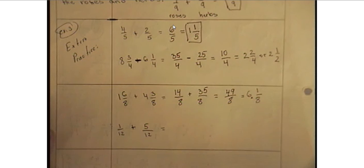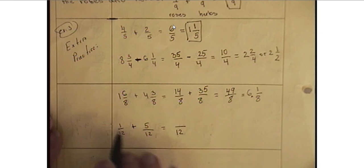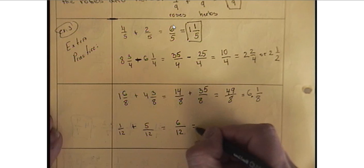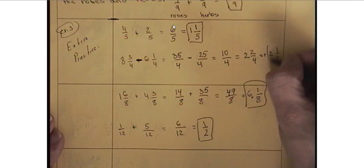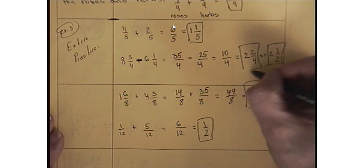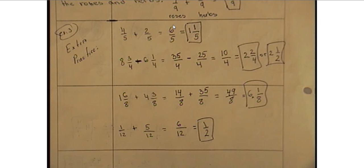And in the last example we have two common denominators. 12, 1 plus 5, 6. 6/12 or 1/2 as a final answer. Alright! So that's all. You guys can go ahead and begin with your practice now. Thank you for watching the video and have a great day! Thanks guys!